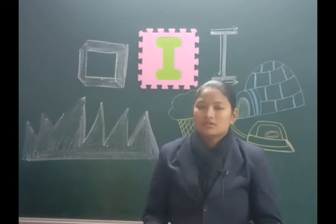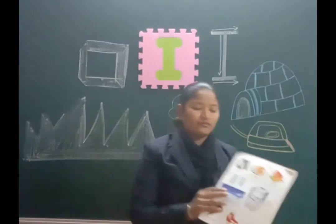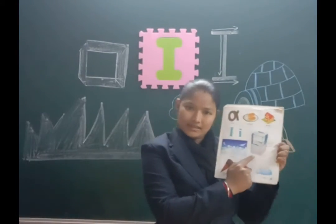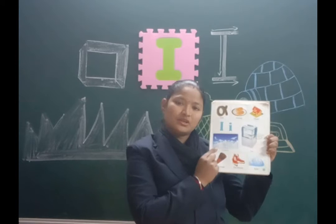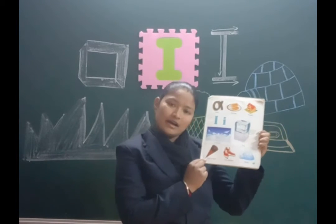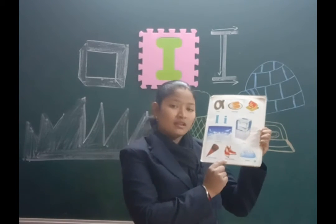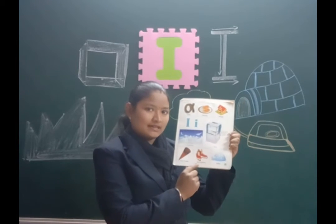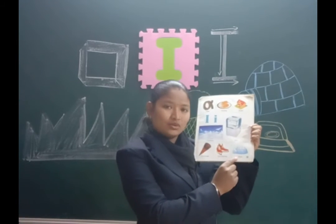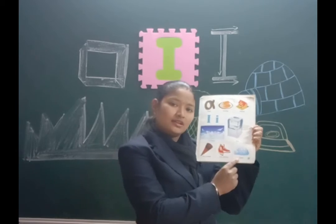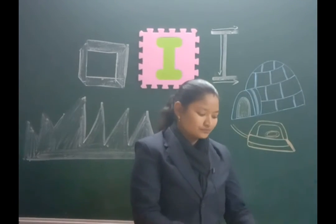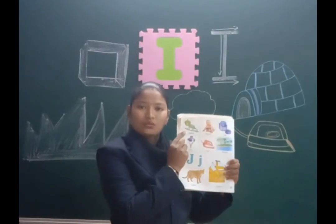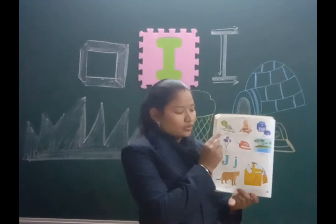Now we will learn some more vocabulary from our book. Ice. Then iceberg. Then ice cream. Then ice cats — it is ice cats. Then igloo — it is igloo. Then this one: iguana. It is iguana.